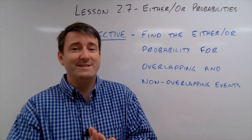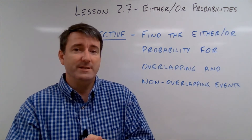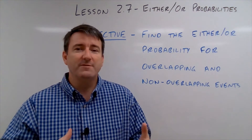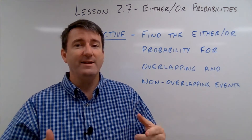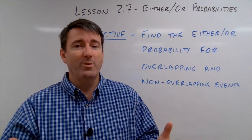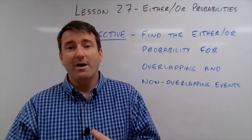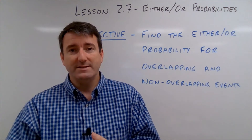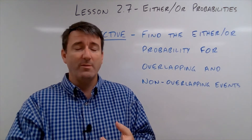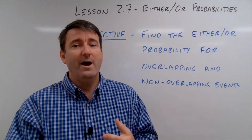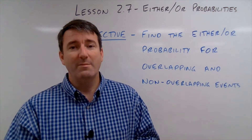Lesson 2.7: Either-or probabilities. Our objective for this lesson is to be able to find the either-or probability for overlapping and non-overlapping events. We're going to start by defining either-or probability, non-overlapping events, and overlapping events.